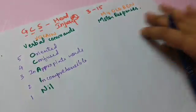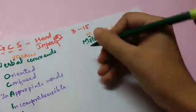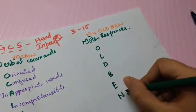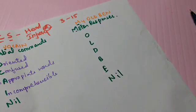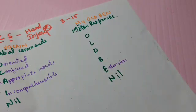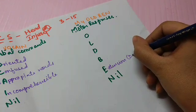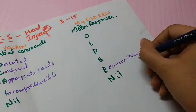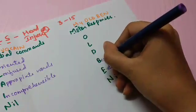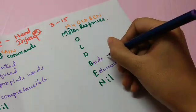Coming to motor responses — 'my old Ben.' The M is for motor. Spelling it out: O, L, D, B, E, N. N again is nil. E is for extension — the patient is in an extended position, which is decerebrate rigidity. B stands for bends, which is decorticate rigidity — the patient is in flexion.